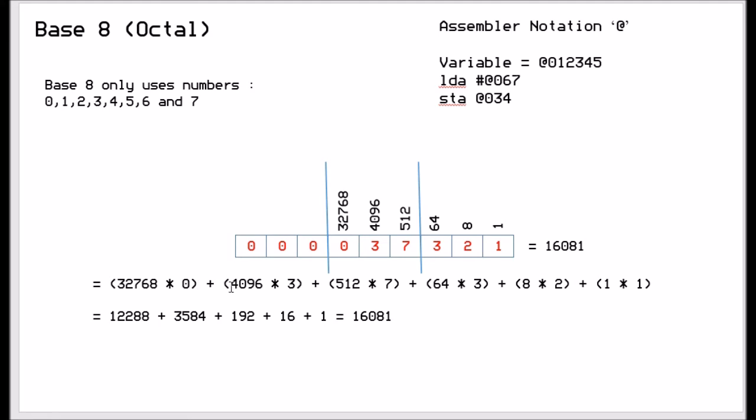So in this particular case it's 32768 times 0, 4096 times 3, 512 times 7, 64 times 3, 8 times 2, 1 times 1, which equals 12288 plus 3584 plus 192 plus 16 plus 1, is equal to 16081. And so 037321 in octal is equal to 16081 in decimal. And the way you use octal in the assembler is you use the at sign, so the variable equals at and then the octal number, or LDA at and then the octal number, or store at the octal number.